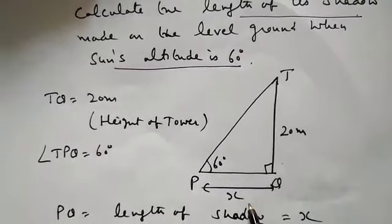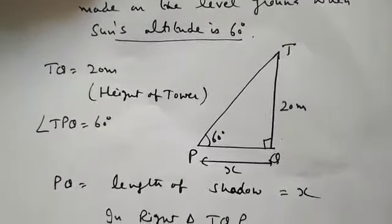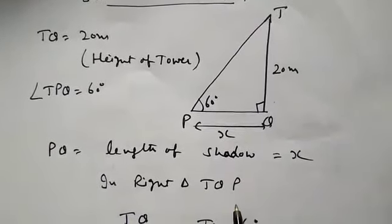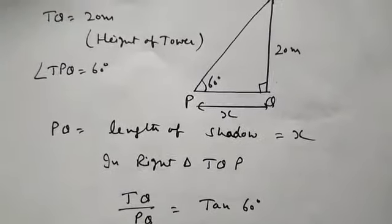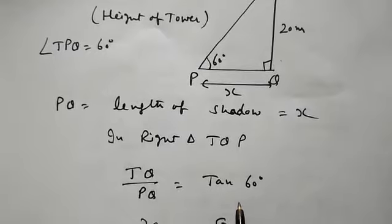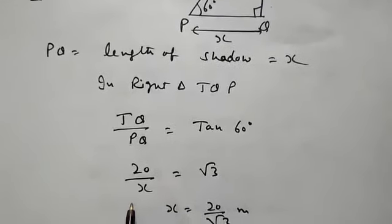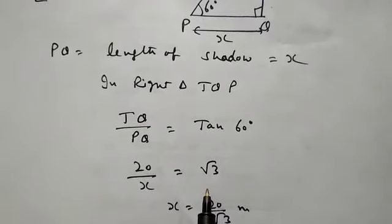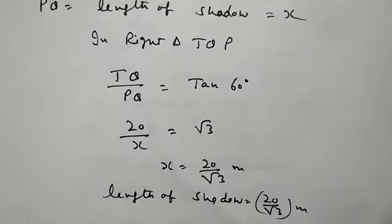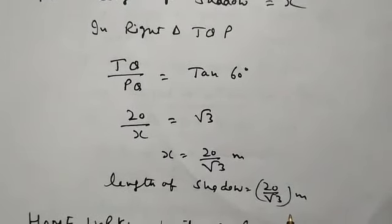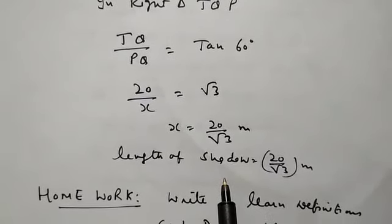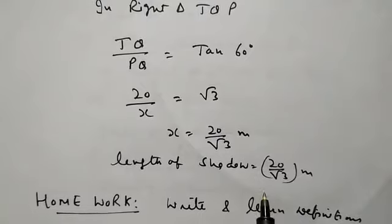The length of shadow is supposed as X. In right triangle TQP, this is the angle of elevation. TQ is the perpendicular and PQ is the base. Perpendicular divided by base equals tan 60. Perpendicular is 20, base is X, and tan 60 is √3. So X equals 20/√3 meters. The length of the shadow is 20/√3 meters. In this way, we are able to find any distance or height using the Trigonometric ratios.